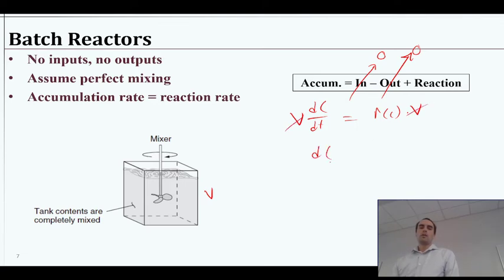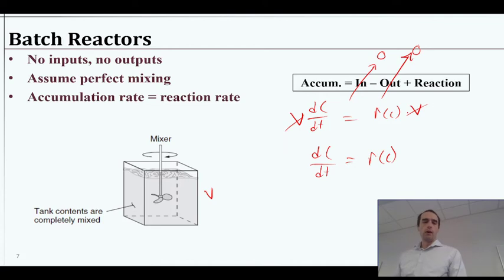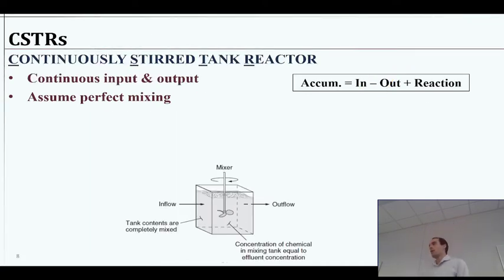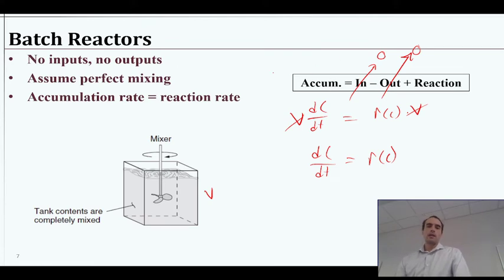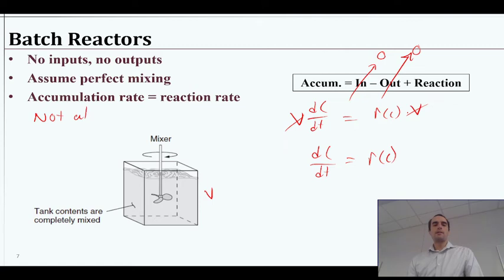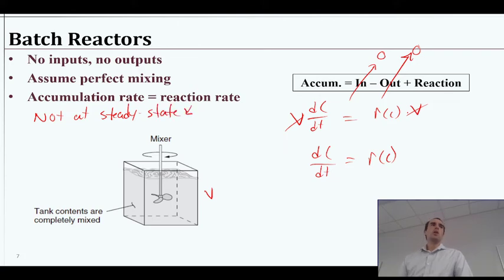The batch reactor system becomes very simple — the volume actually cancels out, and what you're left with is: the change in concentration with change in time is based entirely on whatever reaction term you have. The batch reactor is a very handy way to analyze chemical or biological reactions because of that simplicity. One more thing: if there is a reaction, the accumulation is never zero, so by definition a batch reactor cannot be at steady state if there's a reaction.